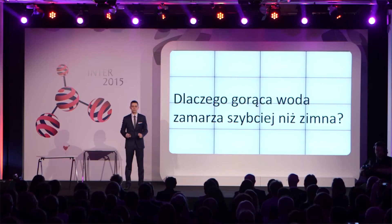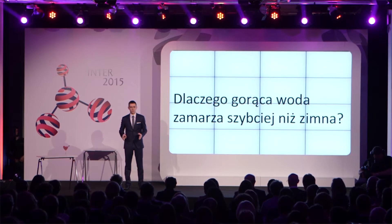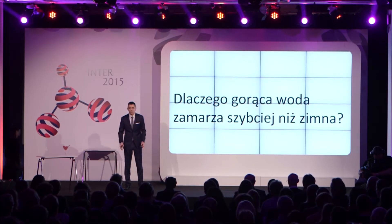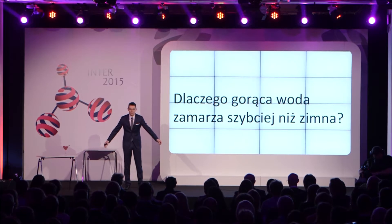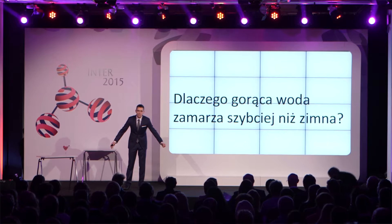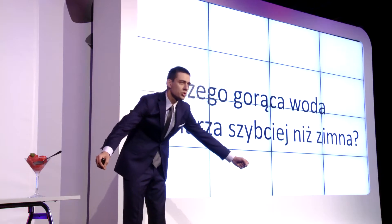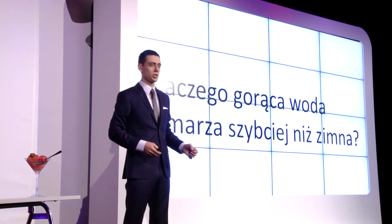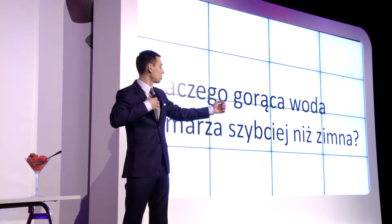Żeby znaleźć odpowiedź na pierwsze pytanie, przyjrzyjmy się nieco dokładniej cząsteczkom chemicznym, z których zbudowany jest świat. Wyobraźmy sobie cząsteczkę składającą się z atomu ojca oraz dwójki atomowych dzieci, które trzymają ojca za ręce. Gdy zwiększymy temperaturę takiej cząsteczki, wzrośnie również jej energia, a zatem każde z dzieci będzie ciągnęło ojca za rękę z nieco większą siłą. Wraz ze wzrostem temperatury długość wiązań chemicznych w cząsteczce będzie rosła.